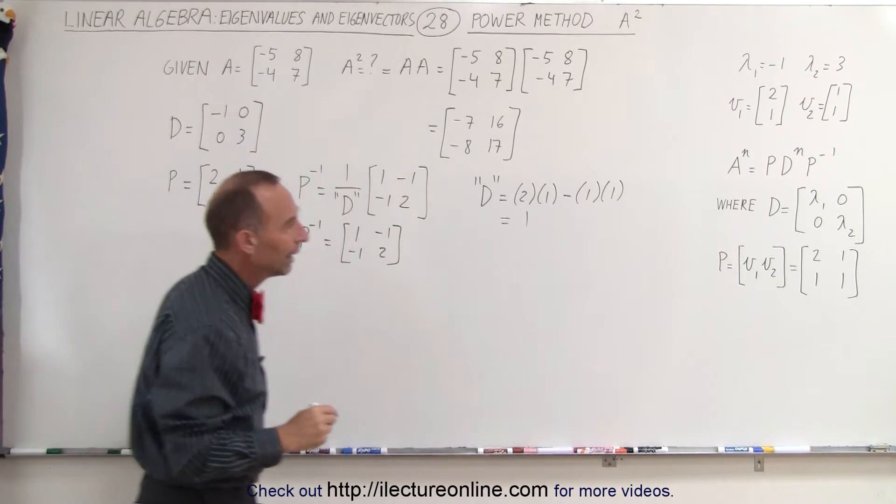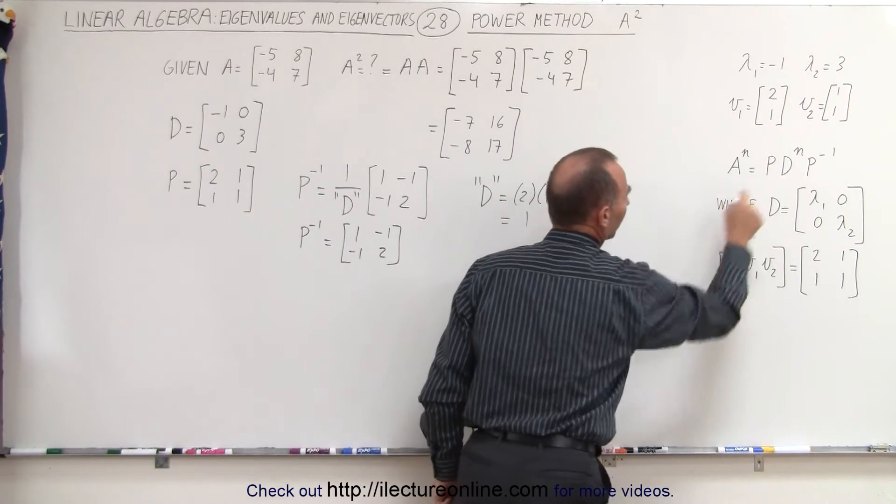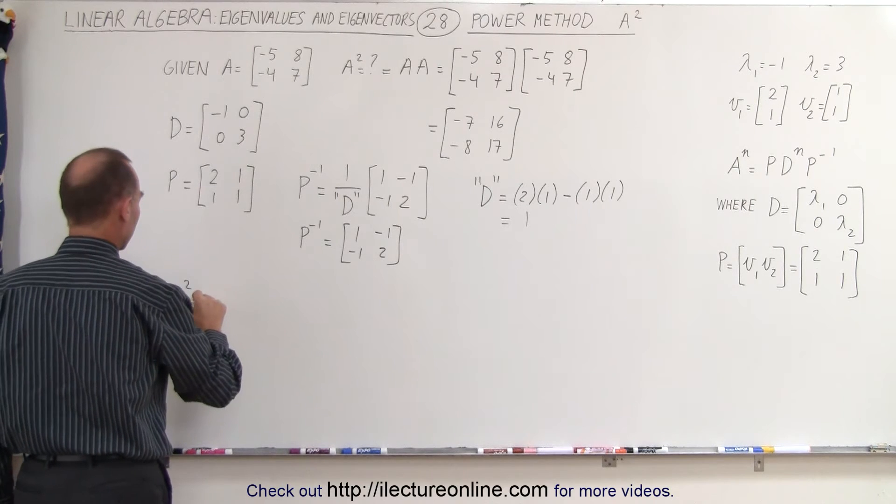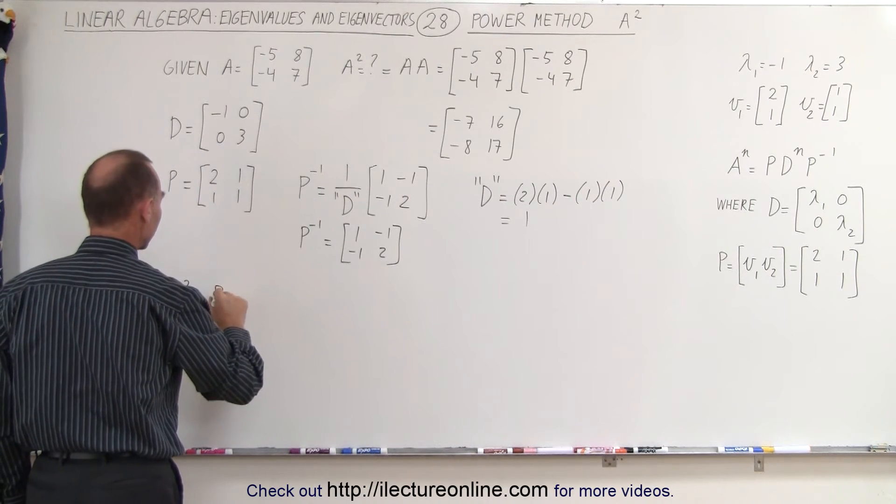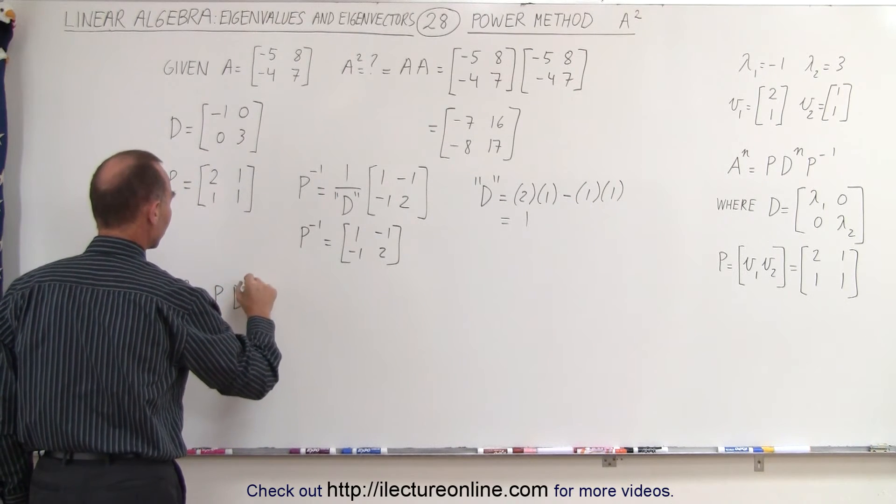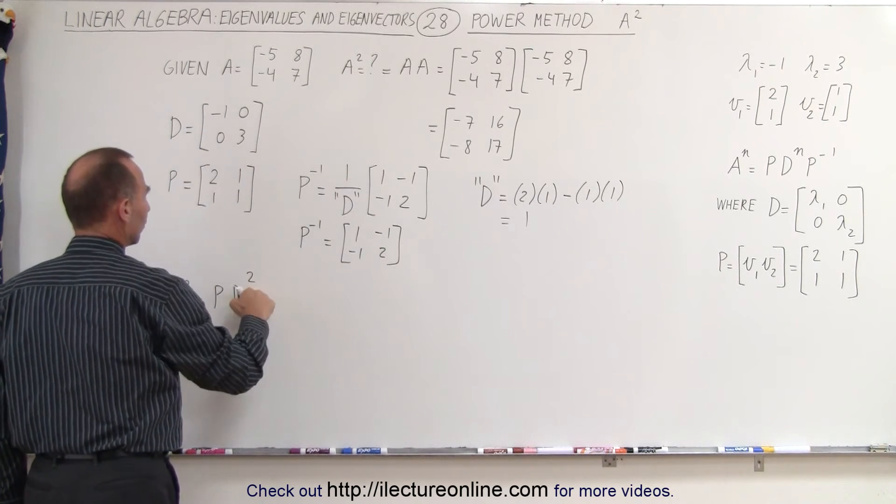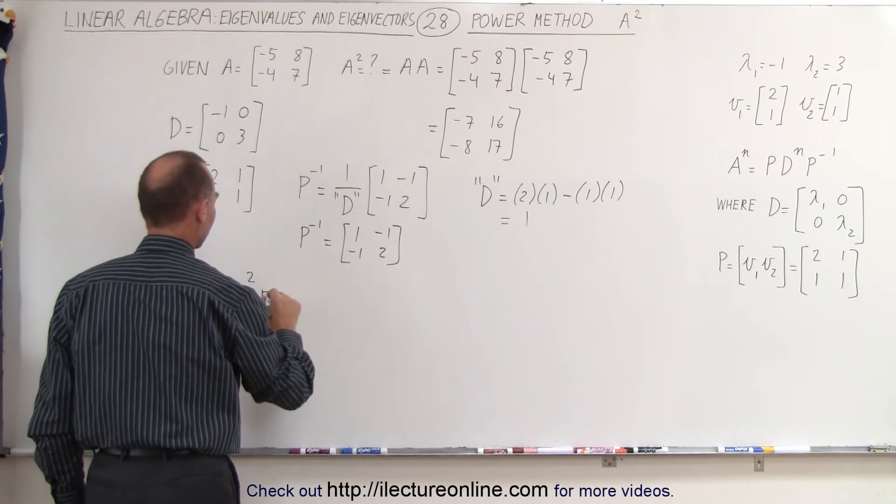Now we go ahead and plug it in here. So we have the A to the second power is equal to the P matrix times the D matrix raised to the second power. This is the diagonal matrix right here to the second power times the inverse of P.